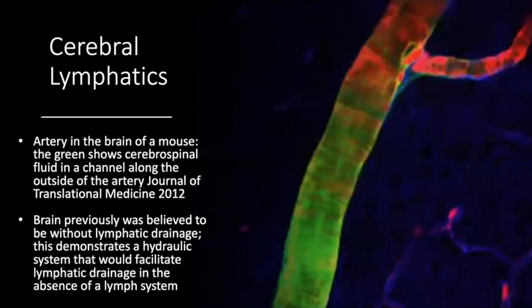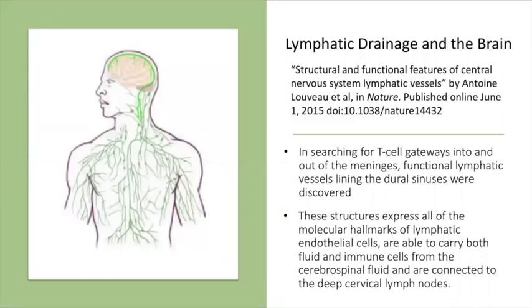Some interesting developments — I would still call these recent even in 2020, because prior to this they weren't sure that any lymphatics were actually exiting the brain. This is an artery of a mouse from the Journal of Translational Medicine in 2012, clearly showing the lymphatic system allowing some drainage of cerebral spinal fluid. Another recent article from Nature in 2015 found T cell gateways in and out of the meninges where lymphatic vessels were discovered. This is another pathway for lymphatic system and CSF to exit the brain, and it helps support the pressure stat model.